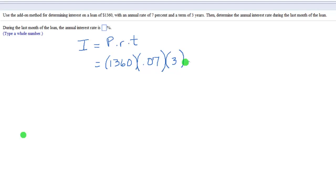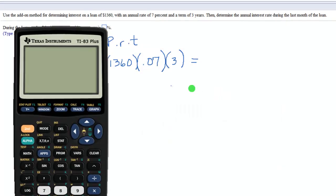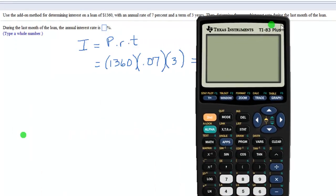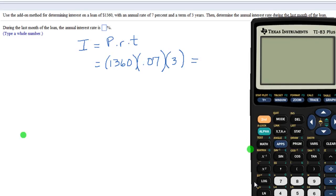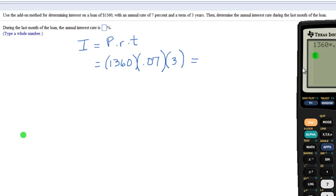So you want to start by computing that. Okay, here's our calculator. So $1,360 times 0.07 times 3.